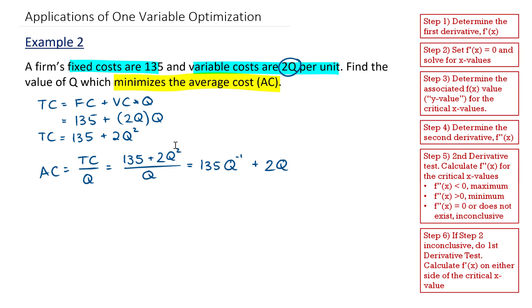So now I have the function that I want to optimize, 135Q to the power of negative 1 plus 2Q. So the first step to doing this optimization, I'm going to determine the first derivative of our average cost.